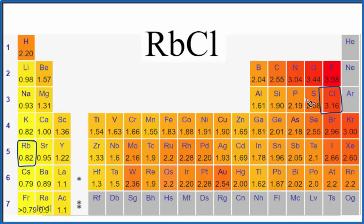When we have a difference of greater than 2.0, we have an ionic compound. So 3.16 minus 0.82, that's greater than 2, so rubidium chloride is an ionic compound.